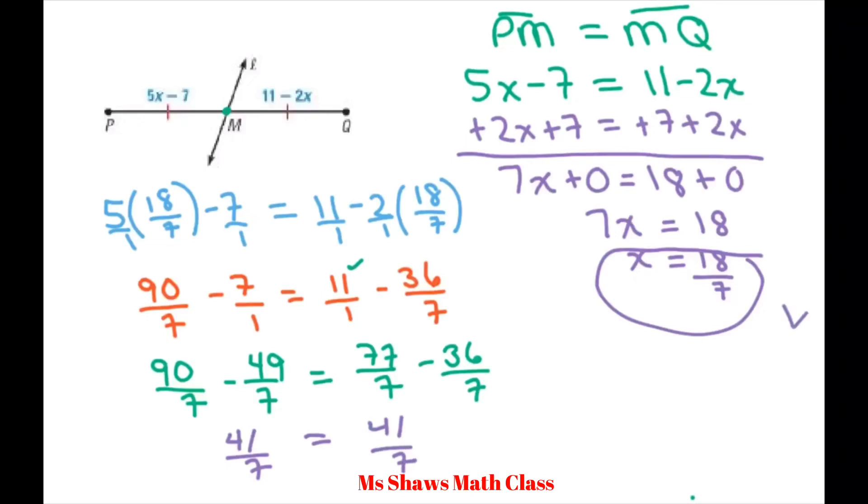So our solution is correct. Therefore, this side of the midpoint of PQ is 41 divided by 7, and this side is also 41 divided by 7. If you add these two up, the length of all of PQ would be 82 divided by 7.